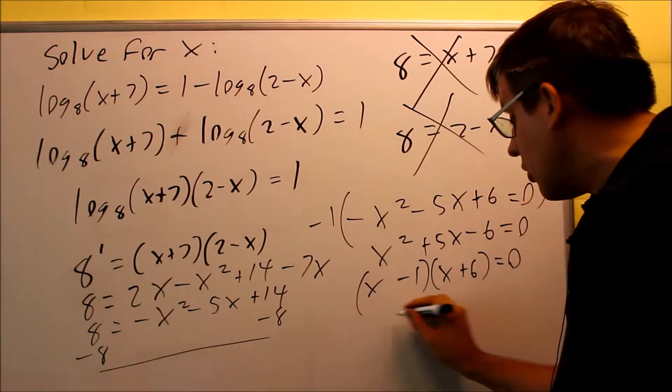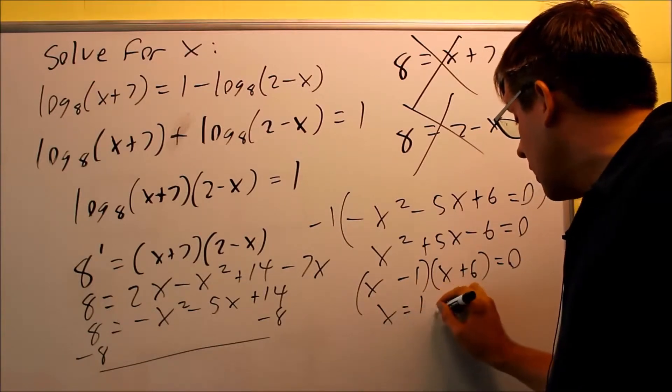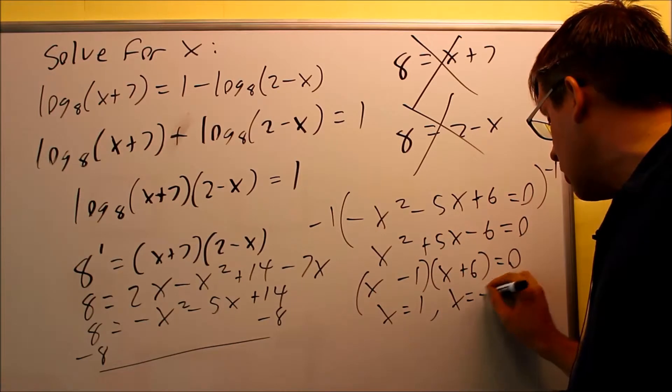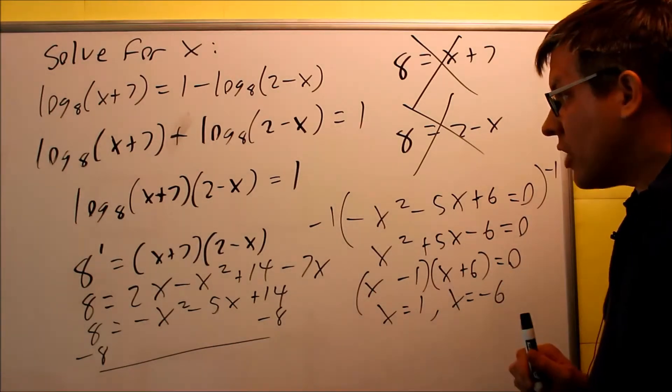When you set both of them equal to 0, you're going to get x is equal to 1, and x is equal to positive 1, and x is equal to negative 6. So we get both of these answers.